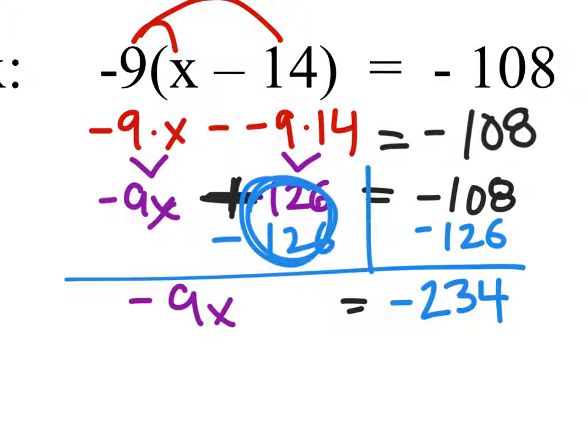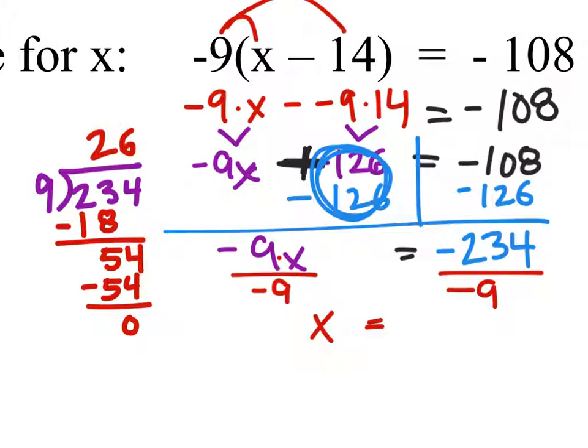And finally, to solve this, we need the x all by itself by getting rid of that negative 9 and using the inverse operation of multiplication, which is division. And we'll do that to both sides. So dividing both sides by negative 9 gives us 1x equals 234 divided by 9. That's going to give us 26. And that's a positive 26 because right here we have these two negatives.